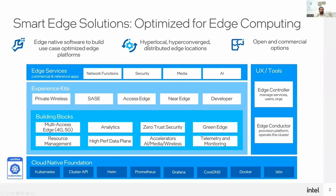We have approached O-RAN RIC enabling using a set of essential building blocks from our SmartEdge Open project. SmartEdge Open is a cloud-native software framework we provide to enable you to build your customized edge solutions, leveraging Kubernetes, while abstracting underlying hardware and network complexity for 5G.